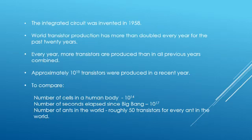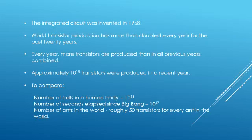The integrated circuit was invented in 1958. World transistor production has more than doubled every year for the past 20 years, according to Gordon Moore, who stated that the number of transistors on a chip doubles every 18 months — a law still applicable today. Every year, more transistors are produced than in all previous years combined. Approximately 10 to the power of 18 transistors were produced in a recent year — more than the number of cells in the human body (10^14) or seconds elapsed since the Big Bang (10^17).